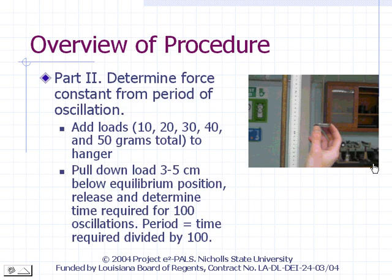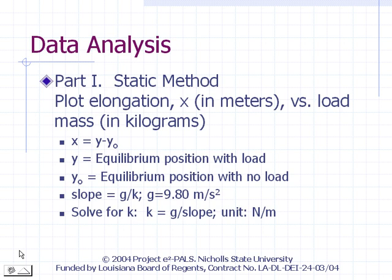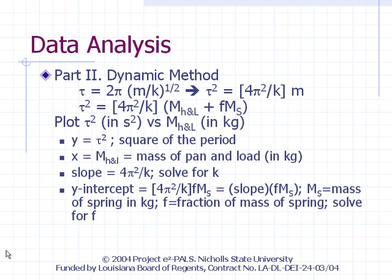In the second part of this experiment, we will determine the force constant of a spring from its period of oscillation. With different loads on the hanger, we will stretch the spring 3 to 5 centimeters below its equilibrium position and then release, causing the load to undergo simple harmonic motion. Record the time for 100 cycles, then divide by 100 to get the actual period. When analyzing data from part 1, express elongation in meters and load mass in kilograms. From the slope of the x-versus-m plot, calculate the force constant k in newtons per meter by dividing the acceleration due to gravity, 9.8 meters per second squared, by the slope.